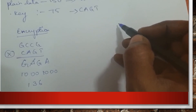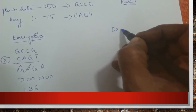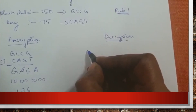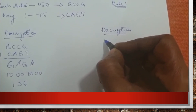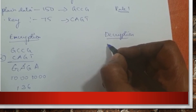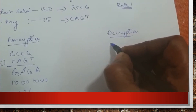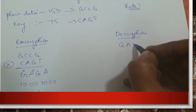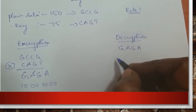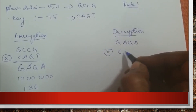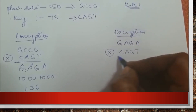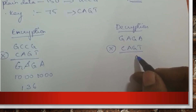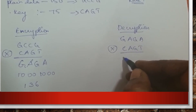On the decryption side, we take the cipher data 136, convert and decode it using DNA rule 1 to get GAGA. We XOR it with the key CAGT. Applying the DNA XOR rules again: for G and C we get...